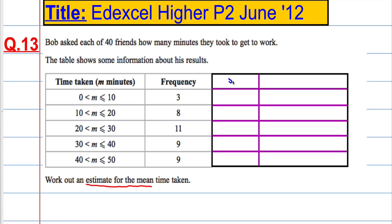So what I'm going to do is assume everyone in this interval actually had a time of 5 minutes. So x is my midpoint. I'm saying everyone in this class took 5 minutes, everyone in this class took 15 minutes. This one is 25 minutes, 35 minutes, and then 45 minutes.